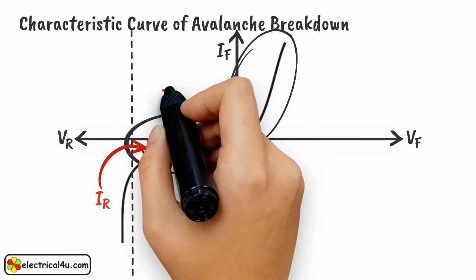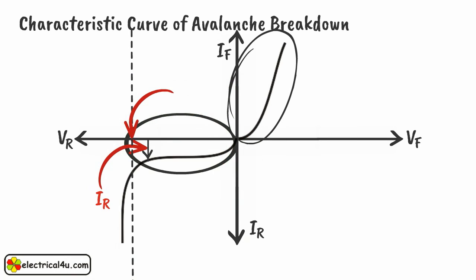This is the minimum applied reverse voltage at which the reverse barrier is broken down — this is nothing but Avalanche Breakdown VR. After this Avalanche Breakdown, the voltage across the junction falls as there is no more depletion layer. At this condition, the junction behaves as practically short-circuited.